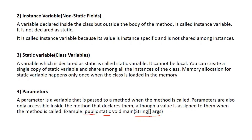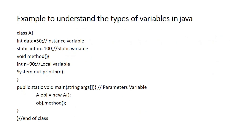To understand types of variables, consider a class with: int data = 15 (instance variable), static int m = 100 (static variable), and inside a method int m = 90 (local variable). Then public static void main(String[] args) — where args is the parameterized variable. We create an object and call the method to demonstrate the variables declared.